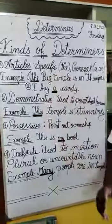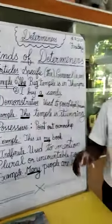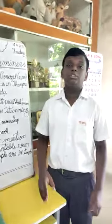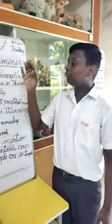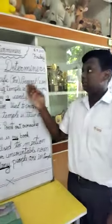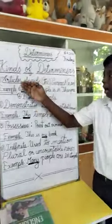Today I am going to tell about determinants and its kinds. First, what is determinants? Determinants is the word which is used to specify the noun. Now, there are 4 main types of determinants.